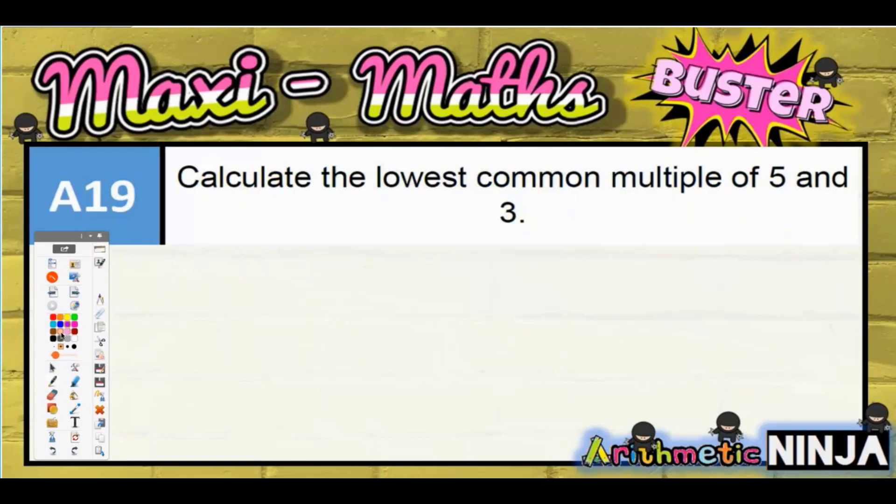Question 19: Calculate the lowest common multiple of 5 and 3. The easiest thing to do here is write multiples of 3 followed by multiples of 5, and the lowest common one is the lowest number that appears in both lists.